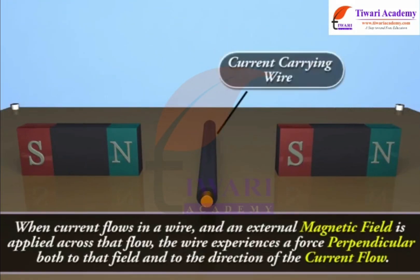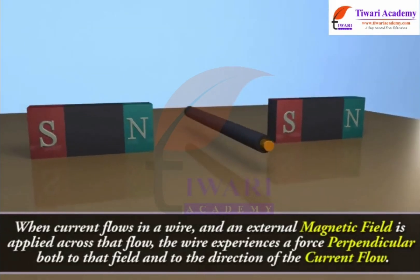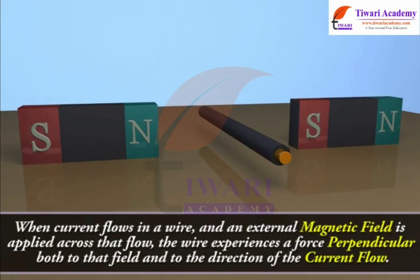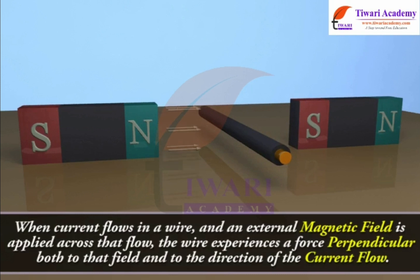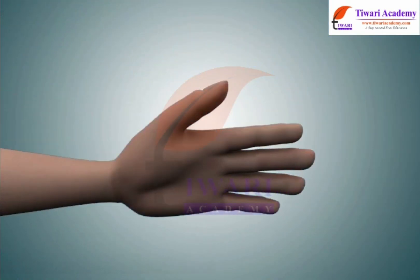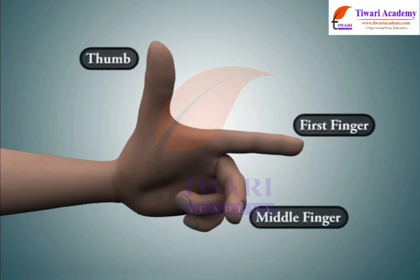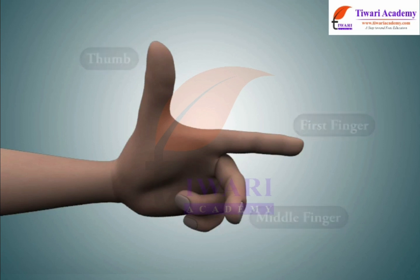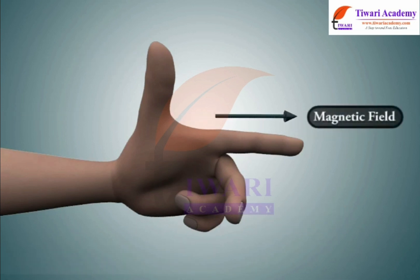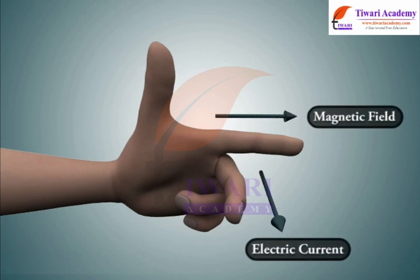When current flows in a wire and an external magnetic field is applied across that flow, the wire experiences a force perpendicular to both that field and to the direction of the current flow. A left hand can be held so as to represent three mutually orthogonal axes on the thumb, first finger, and middle finger. Each finger is then assigned to a quantity: magnetic field, electric current, and mechanical force.